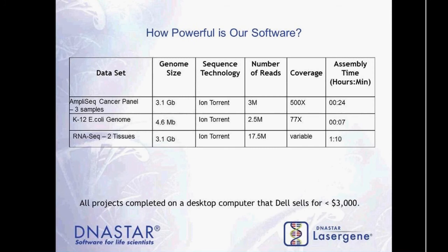One common question is how powerful the software is compared to open source programs running on Linux clusters. With Ion Torrent data, even Proton datasets are smaller to medium-sized and don't stress our software. The AmpliSeq cancer panel with a few million reads across three samples takes under 30 minutes — well under an hour. Smaller projects like the E. coli K12 genome may only take several minutes. RNA-Seq projects generally take one to two hours depending on size, all on a very reasonable computer.